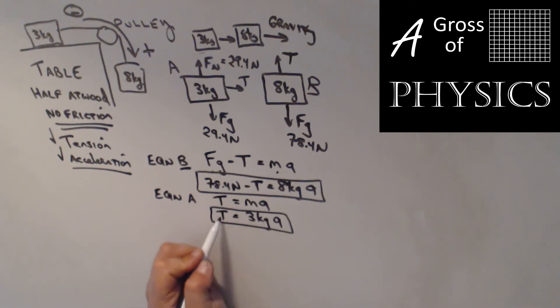We can substitute T here in for T on the other equation and solve for the acceleration. I'll rewrite equation B: 78.4 N - 3A = 8A. I'll add the 3 over, so 78.4 N = 11A. Divide both sides by 11: 78.4 ÷ 11 = 7.13 m/s². That's my acceleration.